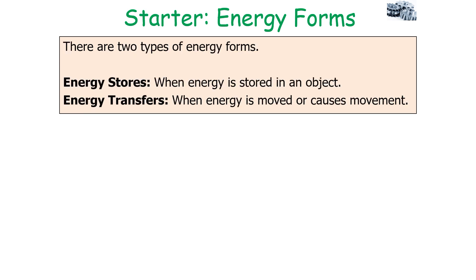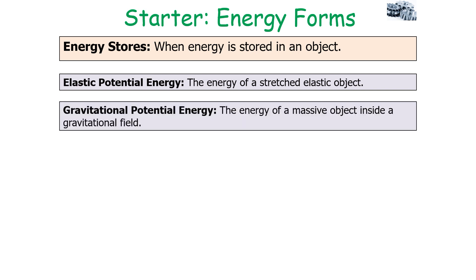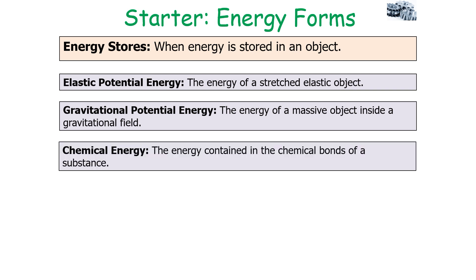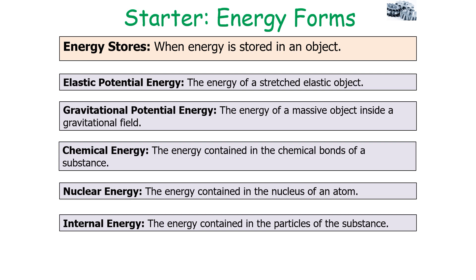There are two types of energy forms: energy stores, where energy is stored in an object, and energy transfers, when energy is moved or causes movement. Energy stores include elastic potential energy (the energy of a stretched elastic object), gravitational potential energy (the energy of a massive object inside a gravitational field), chemical energy (the energy contained in chemical bonds), nuclear energy (the energy contained in the nucleus of an atom), and internal energy (the energy contained in the particles of a substance).